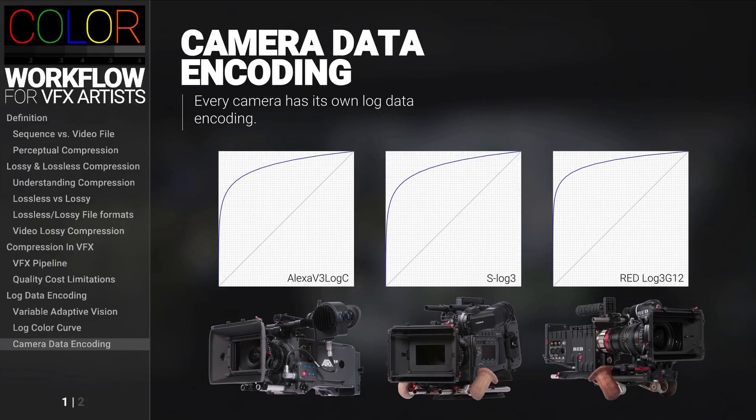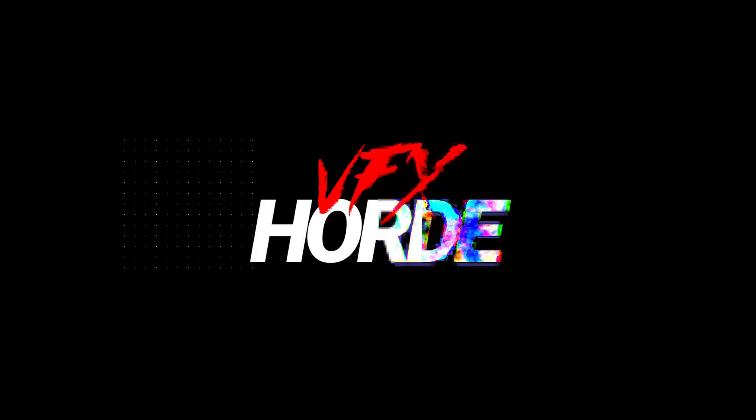And just to give you a little bit of context, every digital cinema camera manufacturer has their own flavor of a logarithmic color curve used for recording. There's a lot more to discuss about logarithmic color curves that we will cover later in the data encoding slide presentation. But for now, you understand that data encoding is a perceptual data compression of the image.